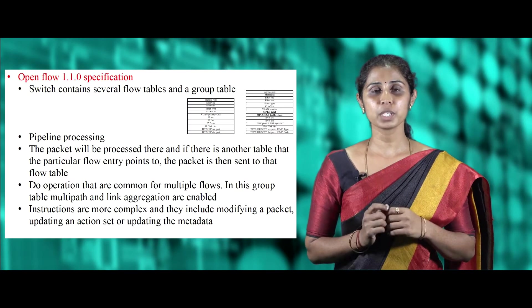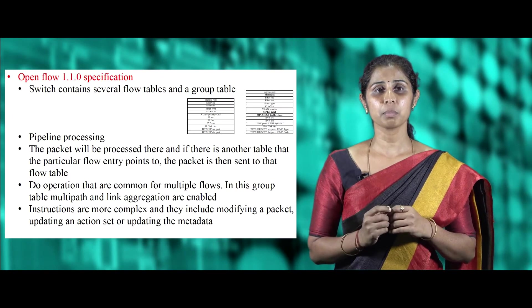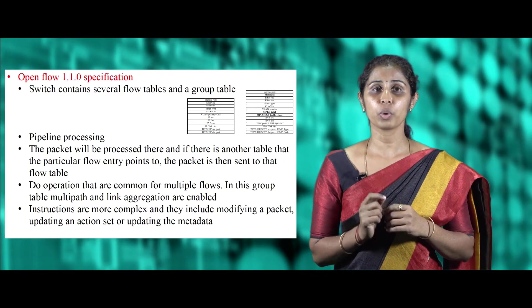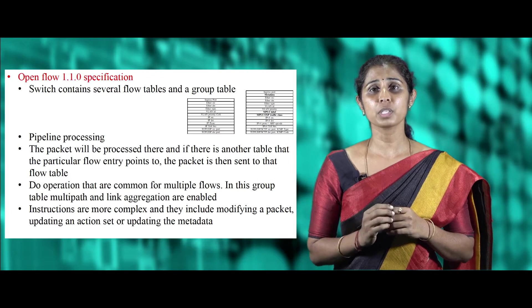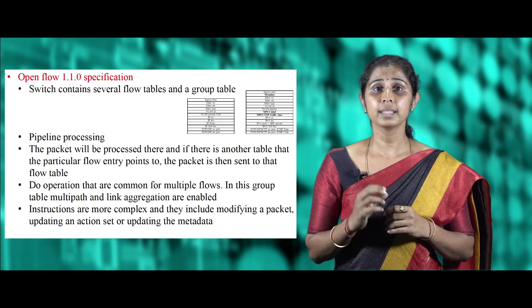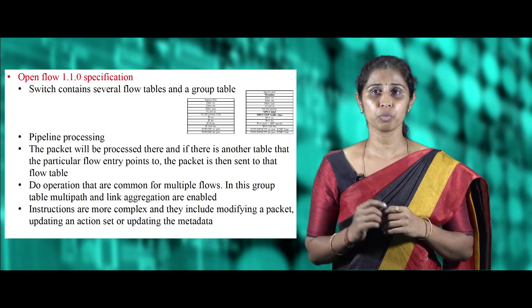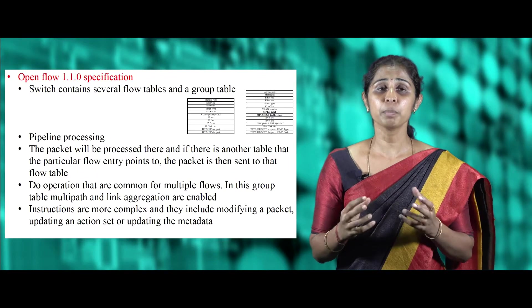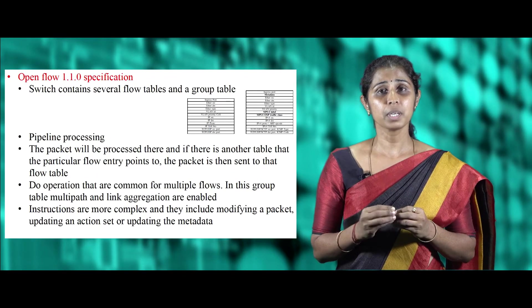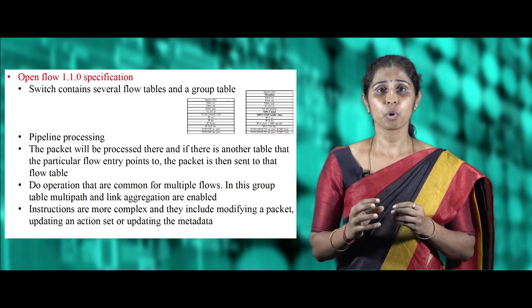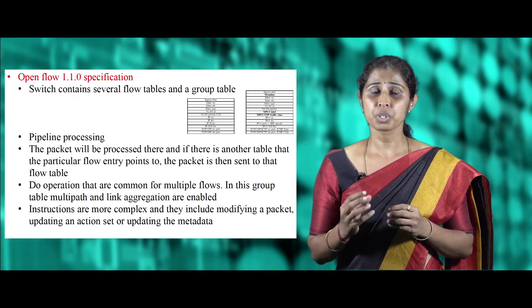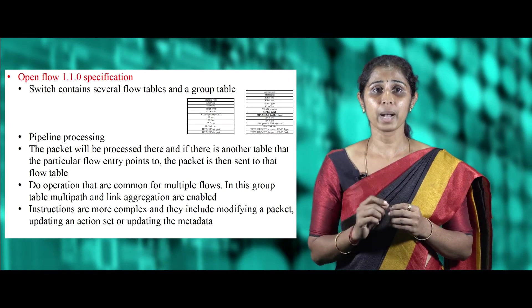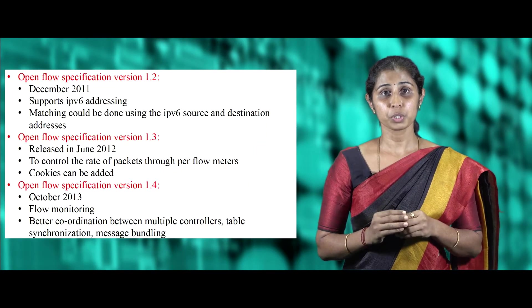OpenFlow 1.1 introduced multiple flow tables and a group table in a switch, instead of just one single flow table as in version 1.0. This table shows the main components of the OpenFlow switch, with highlighted added attributes of version 1.1. The processing of packets entering the switch changed due to multiple flow tables now being available, which are linked to each other through a process called pipeline processing. When the switch receives a packet, it first looks at the flow table to check whether there is any matching flow entry.